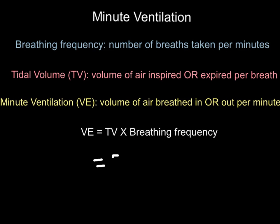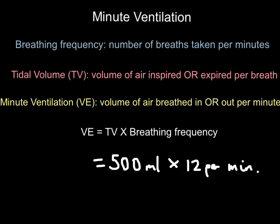An average tidal volume is about 500 millilitres — the volume of air you breathe in or out per breath is about 500 millilitres, or half a litre. In terms of breathing frequency, if you are untrained it's about 12 to 15 breaths per minute; if you are trained, you get down to about 11 or 12. So let's use 12 breaths per minute. Multiply 500 millilitres by 12 and you get 6,000 millilitres per minute — or 6 litres per minute. So the minute ventilation for this individual is 6 litres per minute of air in or out of the lungs.